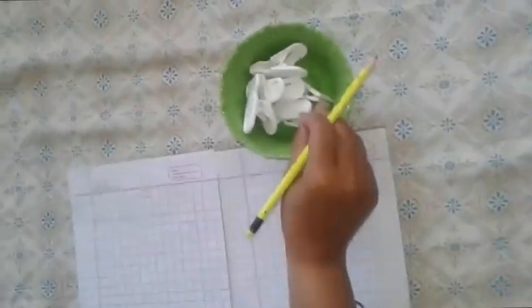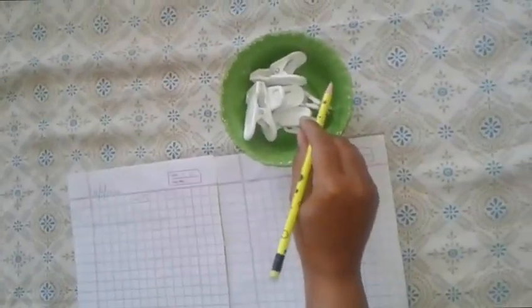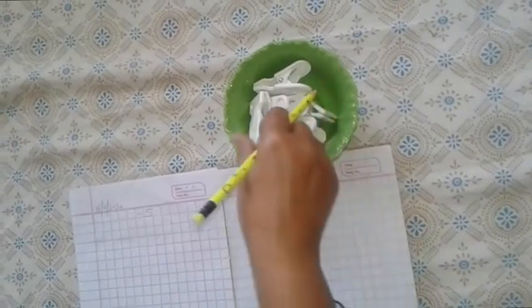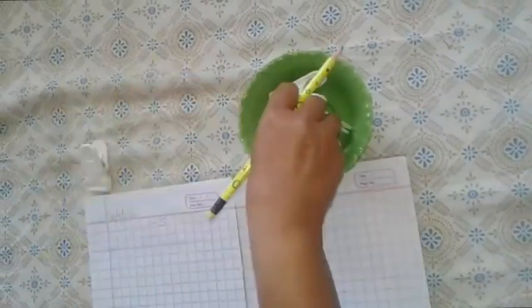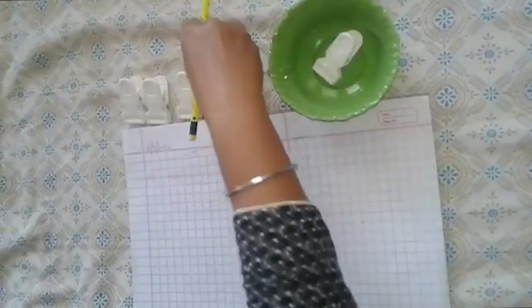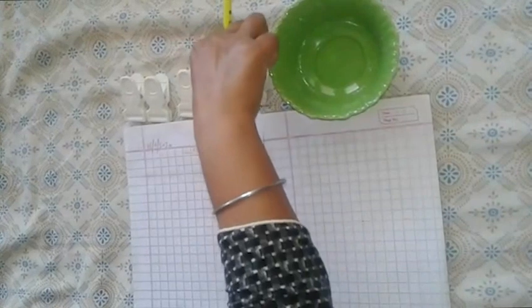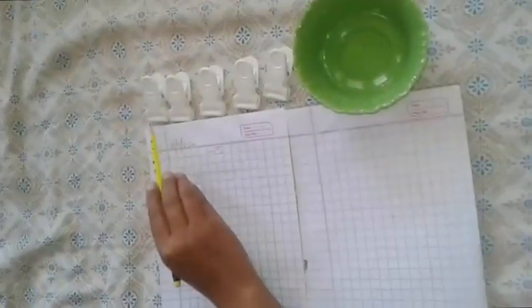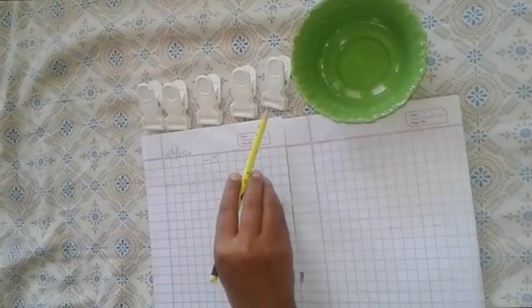Like this, these are clips in the bowl and I will now count them: 1, 2, 3, 4, 5. Like 1, 2, 3, 4, 5.